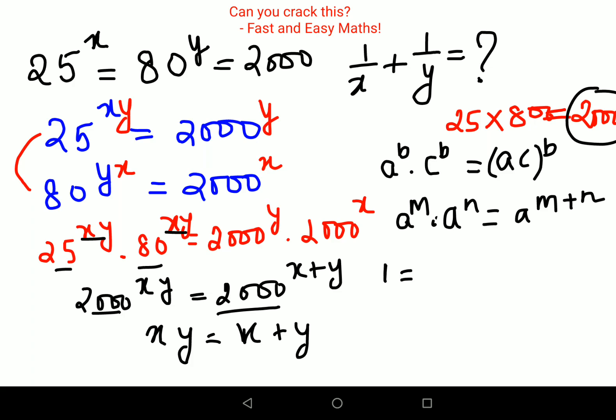So I get 1 equals x plus y upon xy. Splitting it, I will get x upon xy plus y upon xy.